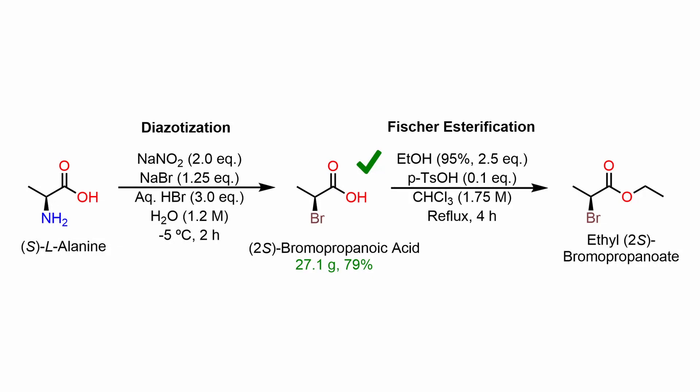Additionally, this will also be the pure S-enantiomer of 2-bromopropanoic acid, but I'll save the polarimetry experiments until after I synthesize its ethyl ester, which is the next step in my synthetic scheme for making naproxen.